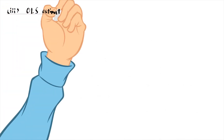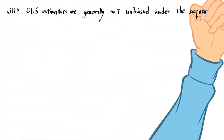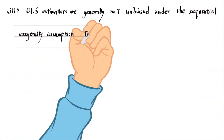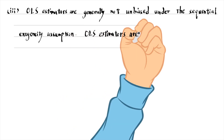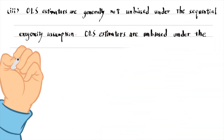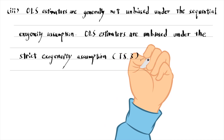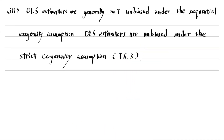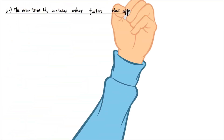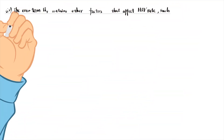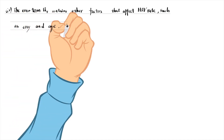For OLS, the OLS estimators are generally not unbiased under the sequential exogeneity assumption. OLS estimators are unbiased under the strict exogeneity assumption. In the last part, we consider a model to explain the annual rate of HIV infections as a distributed lag of per capita condom usage for a state, region, or province. The error term contains other factors that affect the HIV rate, such as city and age.